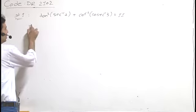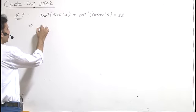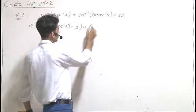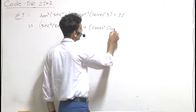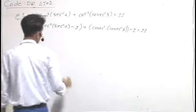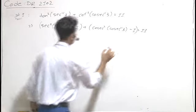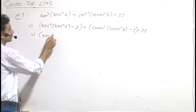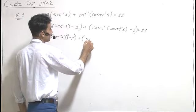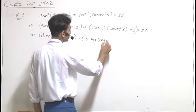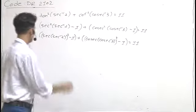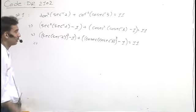Remember, tan² can be written in the form sec²(sec⁻¹2) minus 1, and cot² can be written as cosec²(cosec⁻¹3) minus 1, equal to 11. So we can write sec(sec⁻¹2) whole square minus 1, and cosec(cosec⁻¹3) whole square minus 1, equal to 11.